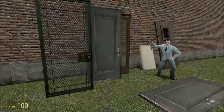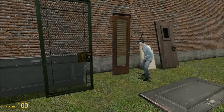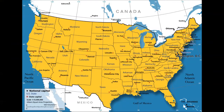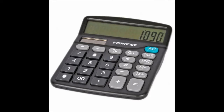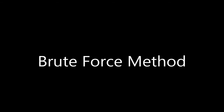Let's say you're a door-to-door salesman who wants to visit 50 cities around the United States. How would you determine the order in which you visited these cities? You could simply calculate the distance of every possible route and compare them to each other. This is called the brute force method, and it sounds like it could really work.